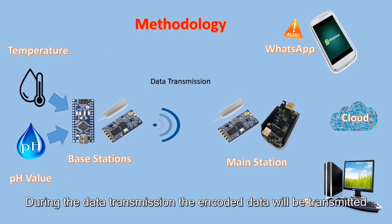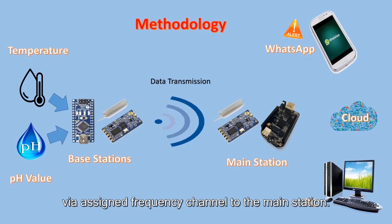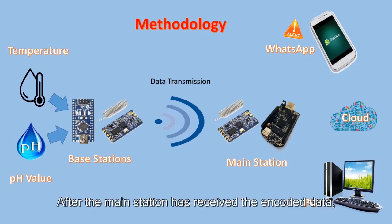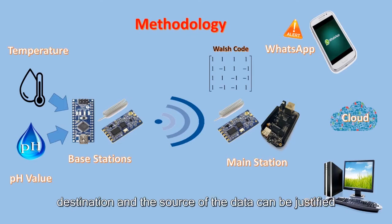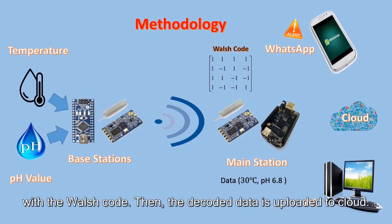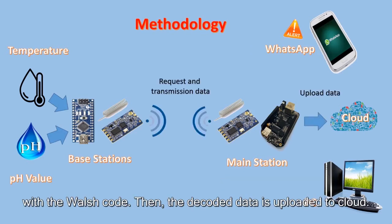During the data transmission, the encoded data will be transmitted via a shared frequency channel to the main station. After the main station retrieves the encoded data, it will be decoded by multiplying with the Walsh code at the destination, and the source of the data can be identified with the Walsh code.